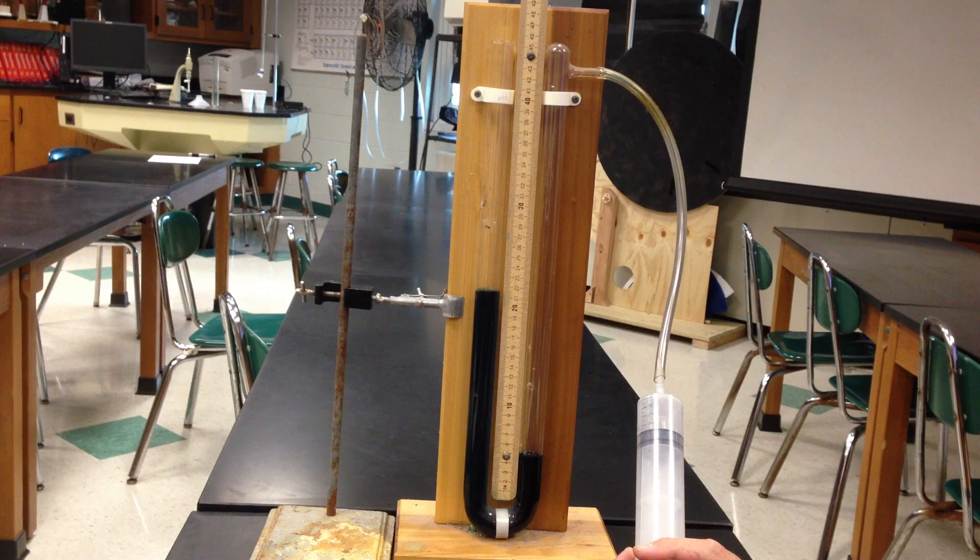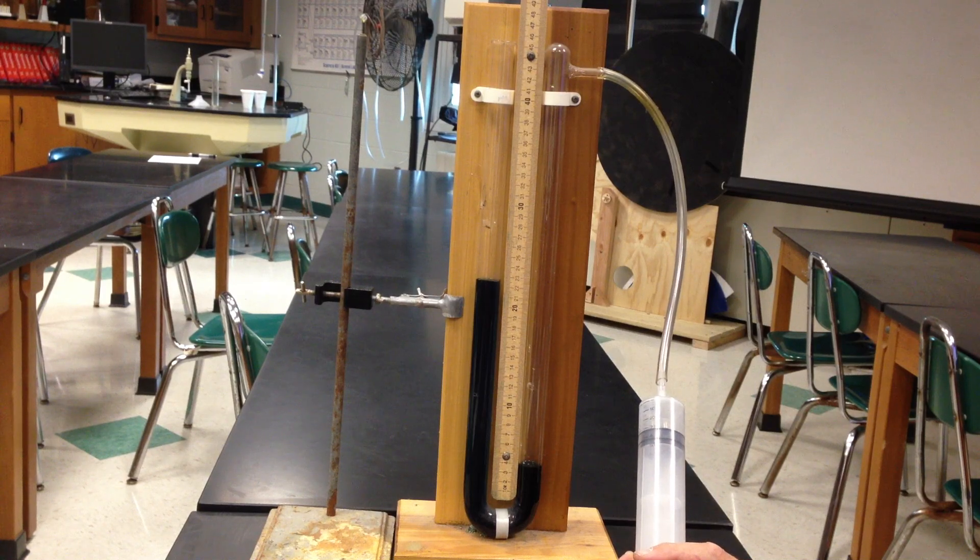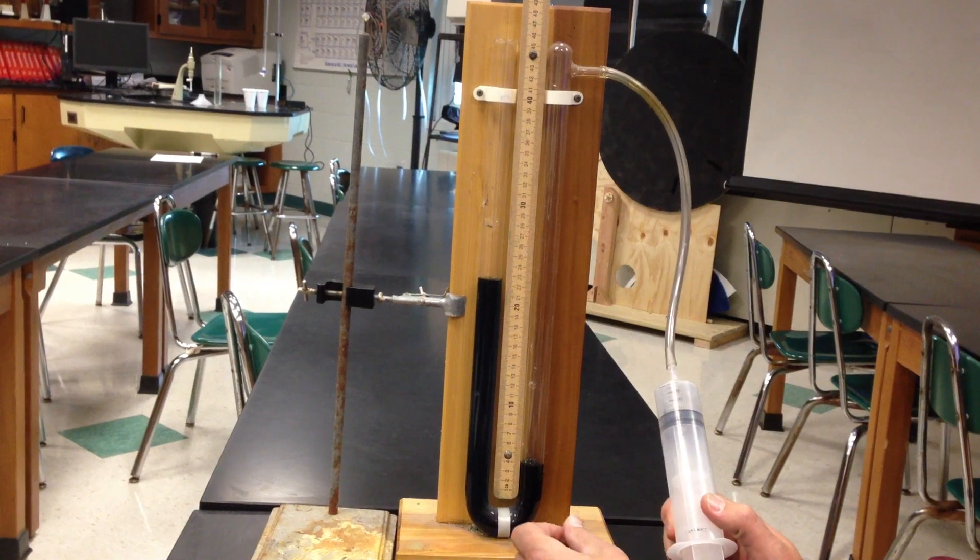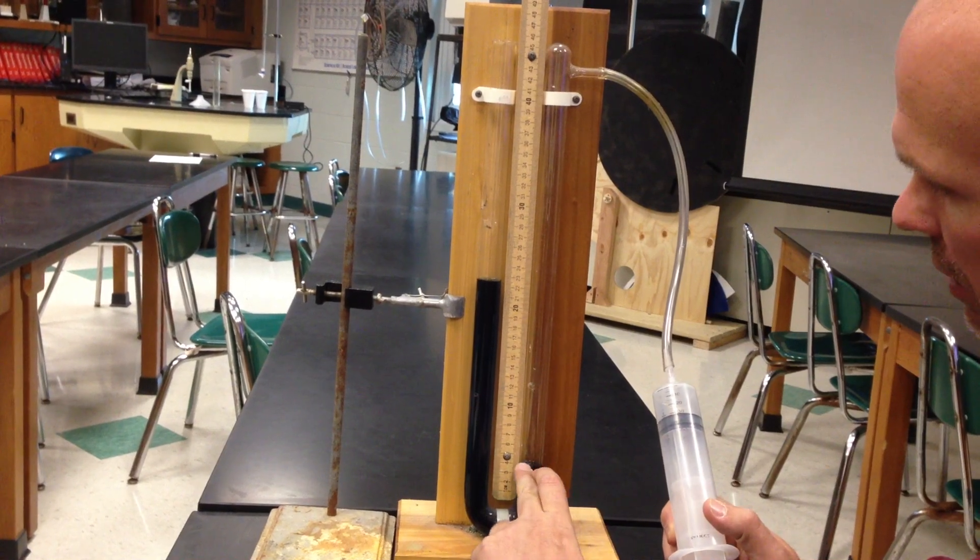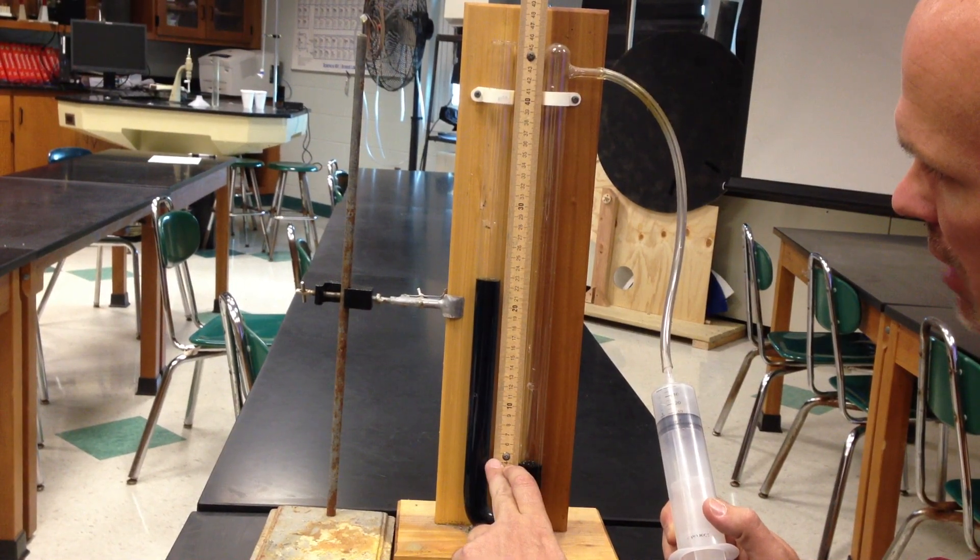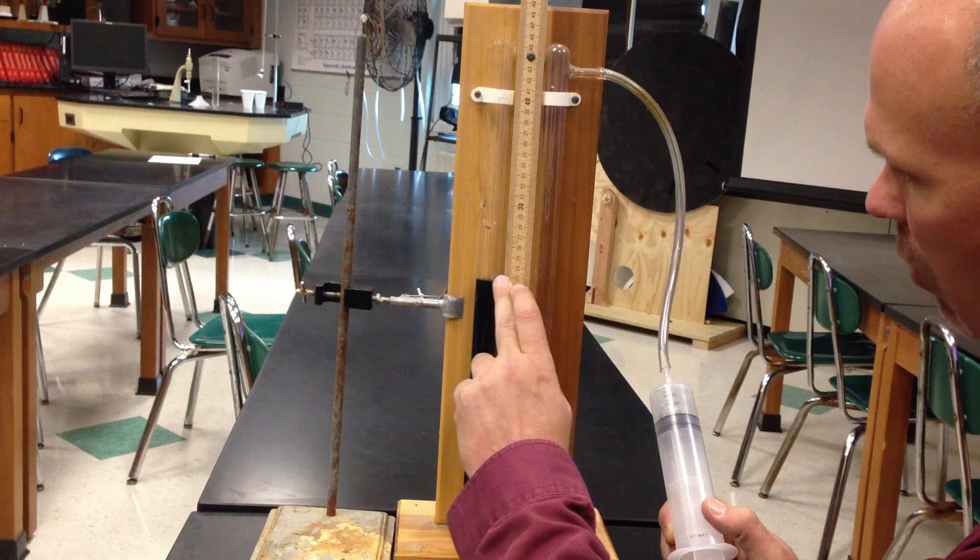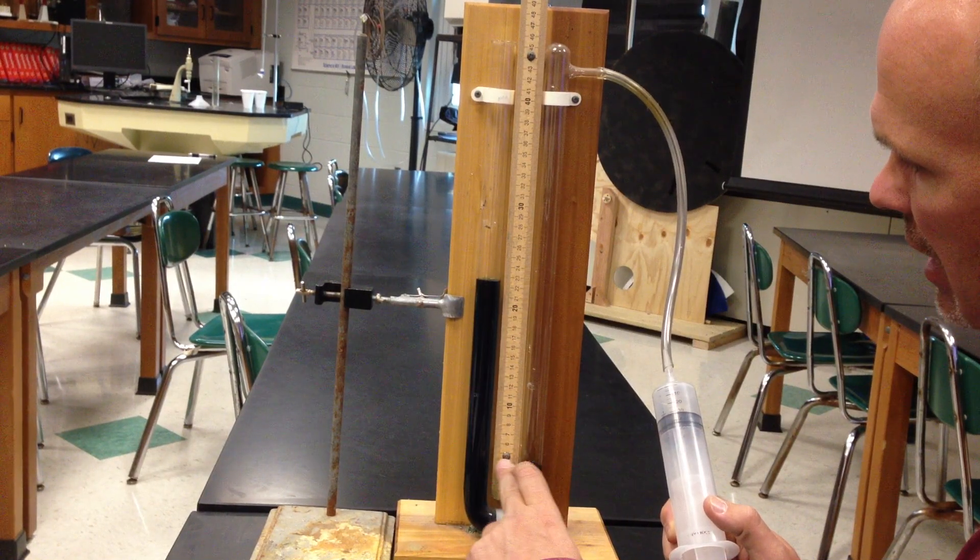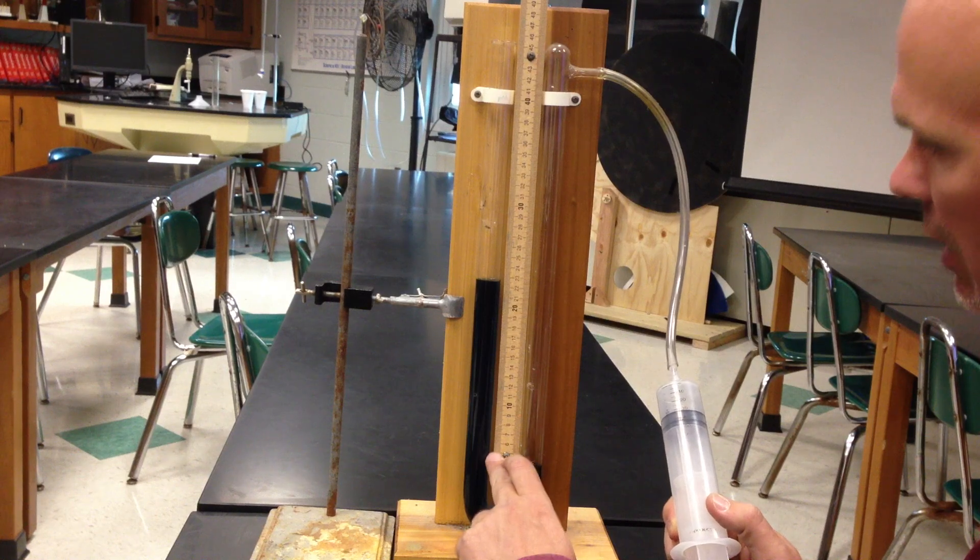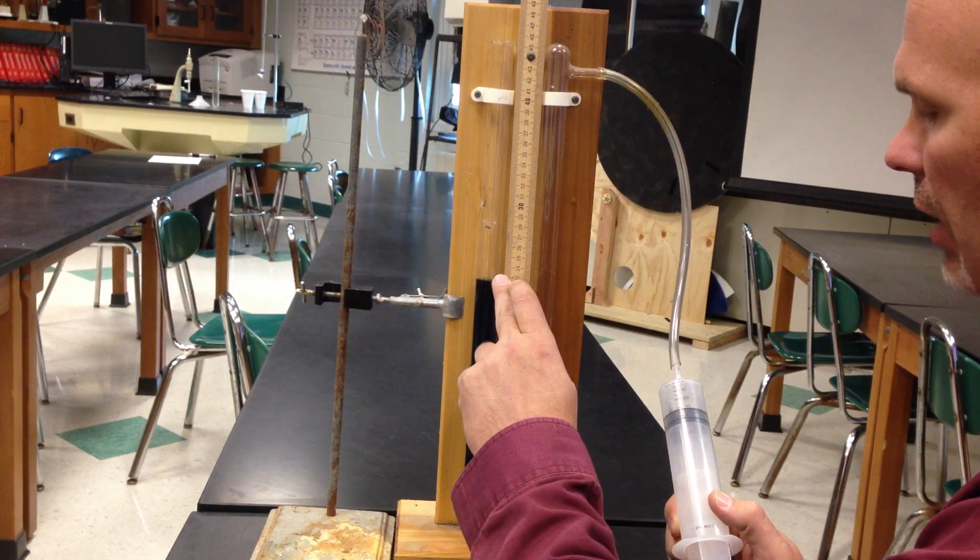And what we can do is we can measure the difference of these liquids to measure the pressure. Right now, if I wanted to measure the pressure, if this was mercury, we would say that I'm supporting, if this is 4, and let's pretend this is approximately 23, so this is 19. So from this point here, I'm measuring 19